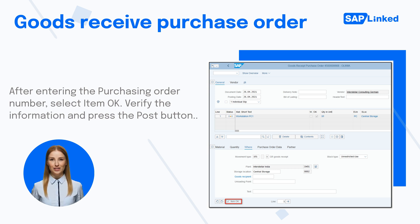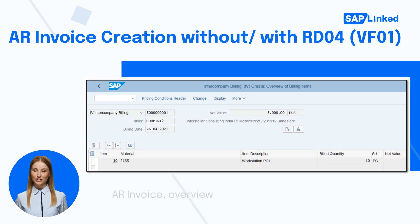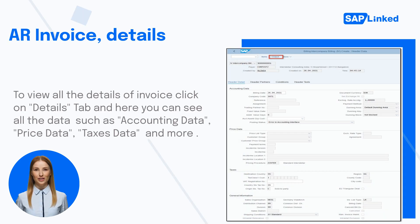The logistics part of the intercompany STO process and the intercompany sales are now complete. The financial postings can be finished by creating payment invoices. Create the AR invoice using transaction VF01, enter the delivery number, then hit Execute. Once you execute, the system will redirect you to the Overview page. To view all the details of the AR invoice, double-click on the line item. The screen will display data such as accounting data, price data, taxes data, and more.